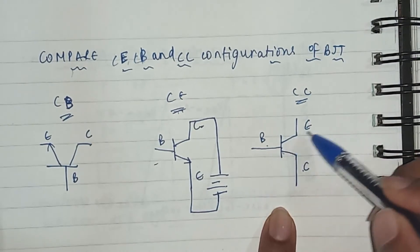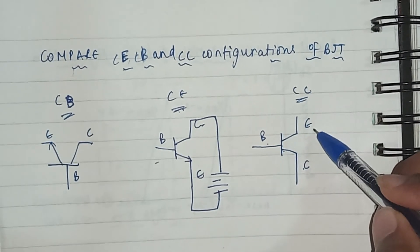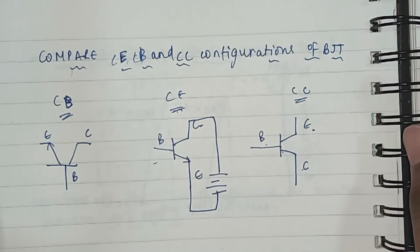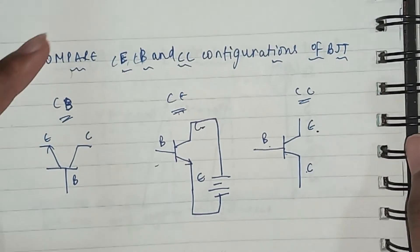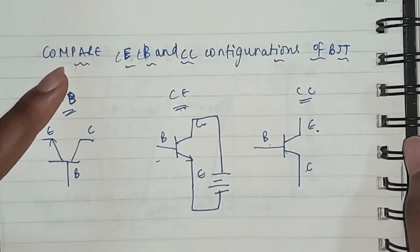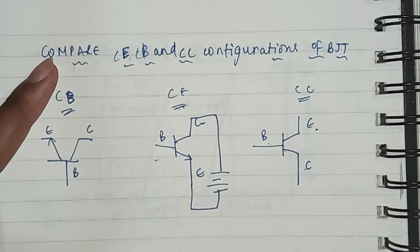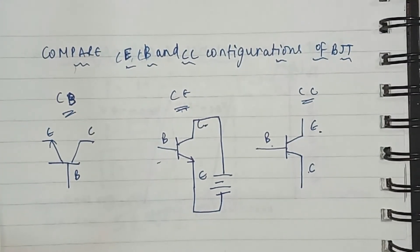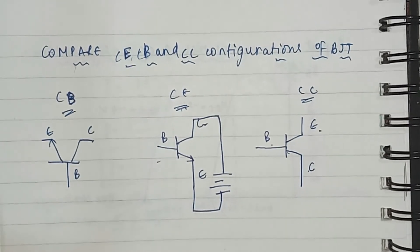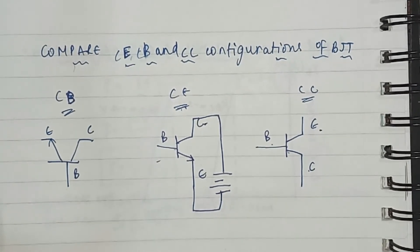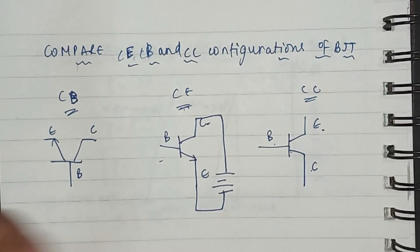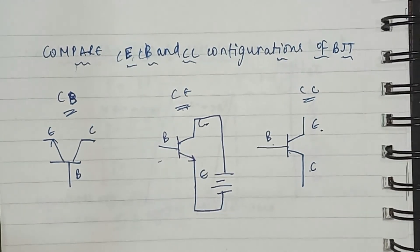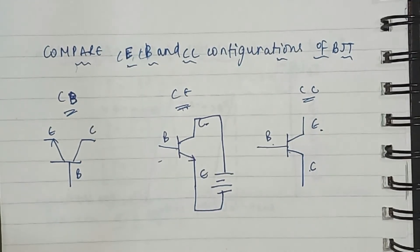When talking about the definition while comparing these three, in the CB configuration, the base terminal acts as an intermediate between the input that is the emitter and the output that is the collector. This is also called grounded base configuration. The emitter terminal in case of CE configuration acts between the input that is the base and the output collector. This is also called grounded emitter configuration.